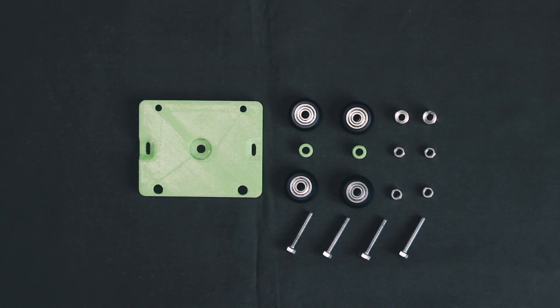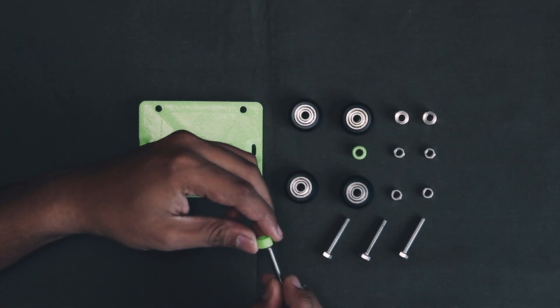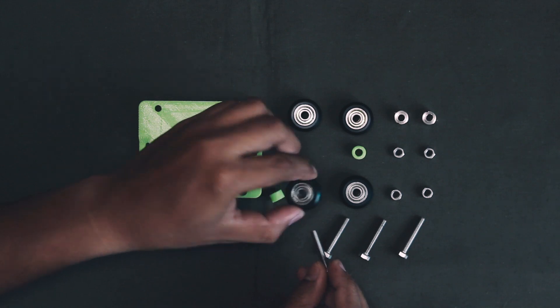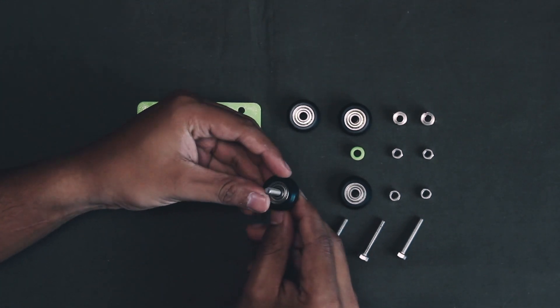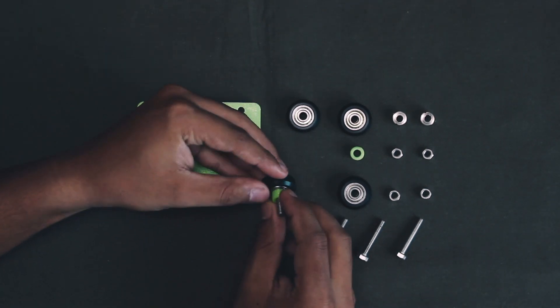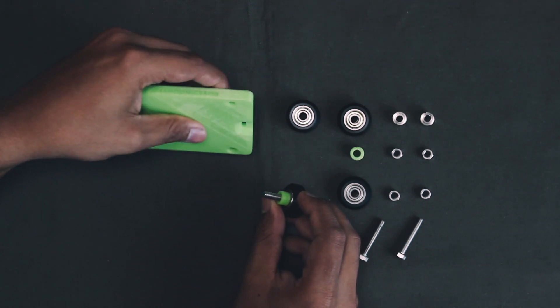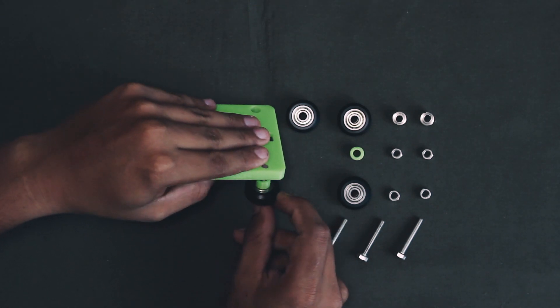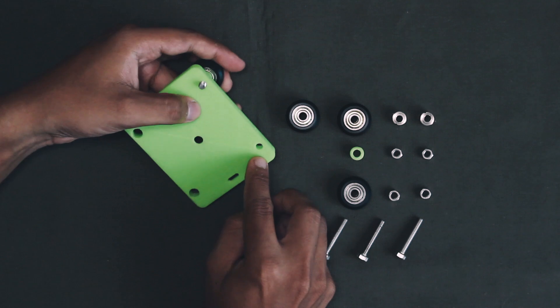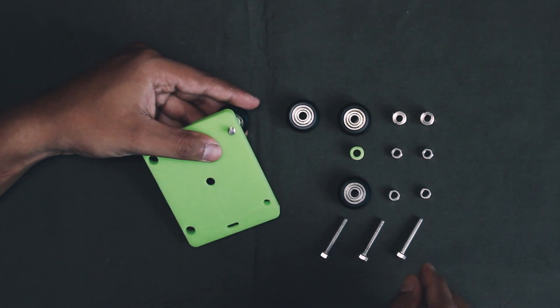We're gonna start with assembling the gantry plate. First take your M5 bolt, insert the wheel into it followed by the washer and insert this into the smaller hole onto the gantry plate. Secure this with the M5 nut and repeat the process onto the other smaller hole.